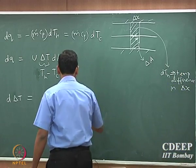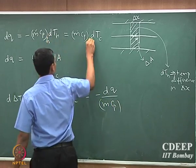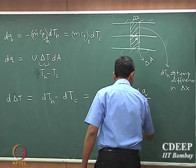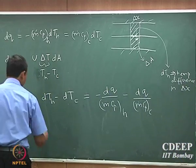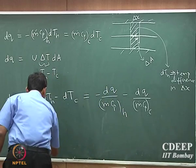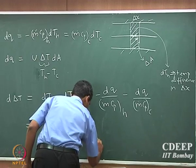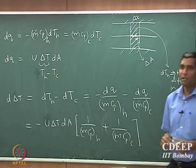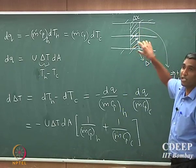From here we can write that d(delta_t) equals minus dQ divided by m-dot Cp of the hot fluid, minus dQ divided by m-dot Cp of the cold fluid. Since dQ equals U times delta_t times dA, we can write d(delta_t) equals U times delta_t times dA times the quantity (1 over m-dot Cp hot plus 1 over m-dot Cp cold). Delta_t is the local temperature difference between the two fluids.